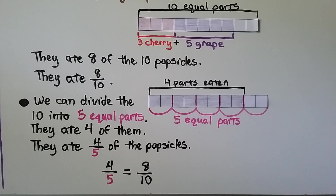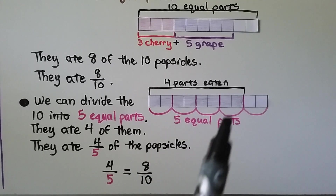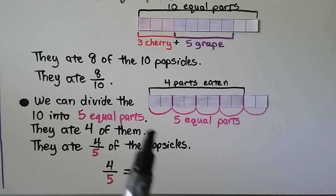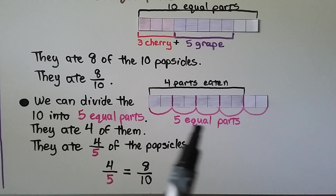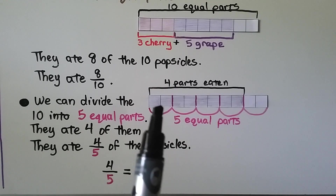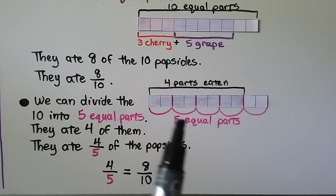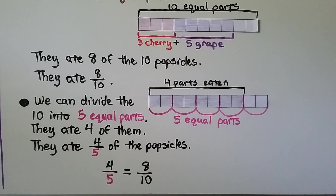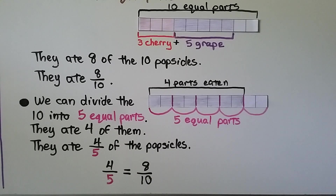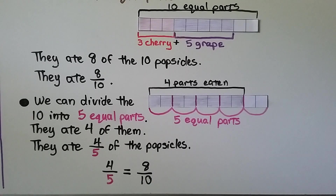We can divide the ten into five equal parts with two in each part. We can say they ate four of those parts. That means they ate four-fifths of the popsicles. And four-fifths is equal to eight-tenths. We just grouped it differently.